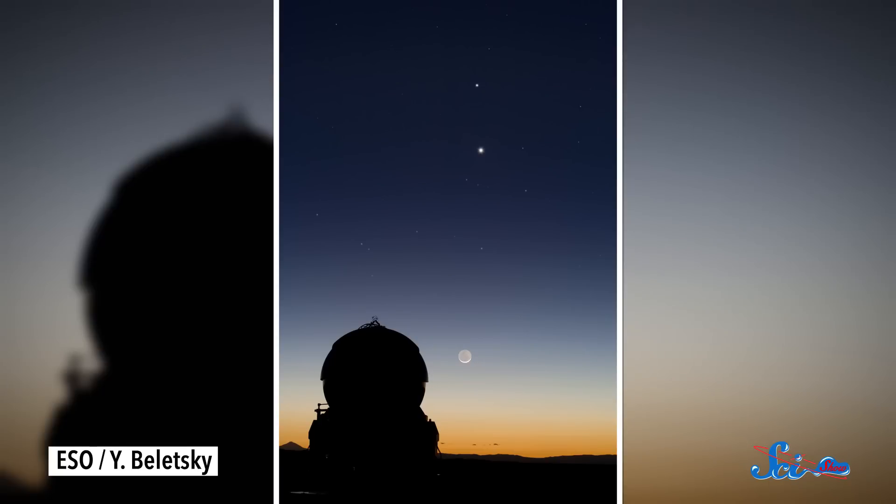Most of the time, Mercury is so close to the Sun that it's impossible to see. Either by the time it's dark enough to see the planet, it's already followed the Sun below the horizon, or by the time it rises above the horizon, the Sun is already up. But a few times a year, it's visible to the naked eye.